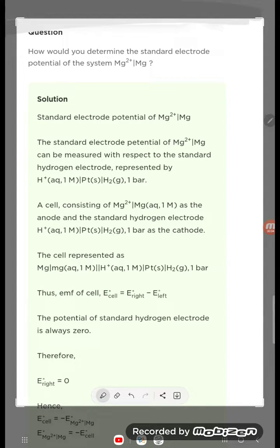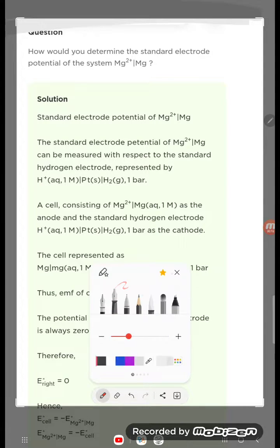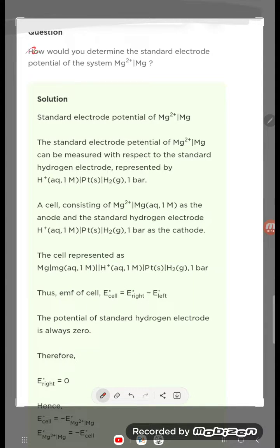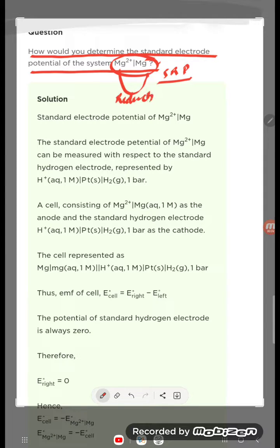Hello students, let's try to understand a problem. The problem is very simple from electrochemistry. The question is: how would you determine the standard electrode potential of the system Mg²⁺/Mg? So actually you are going to calculate the standard reduction potential. How can you calculate it?